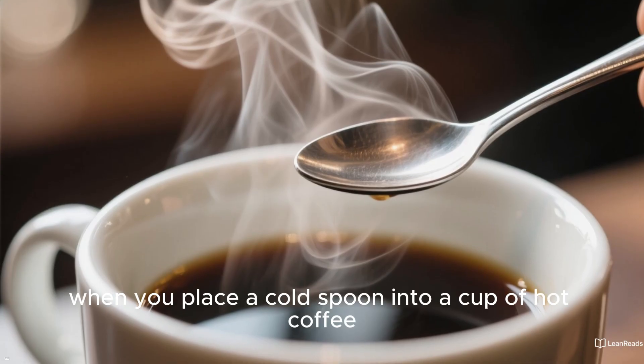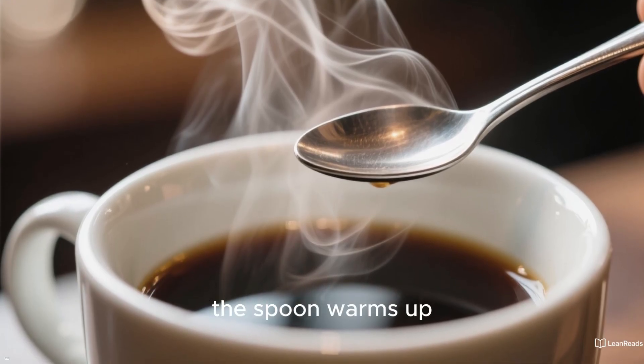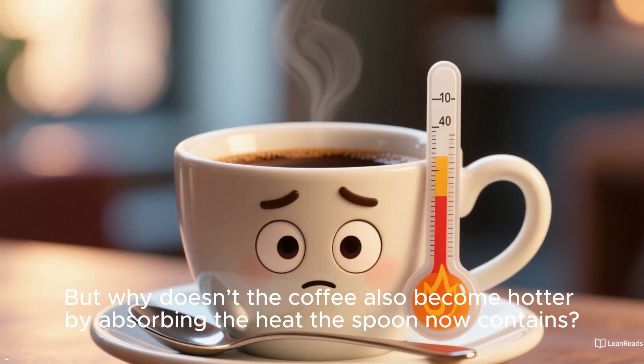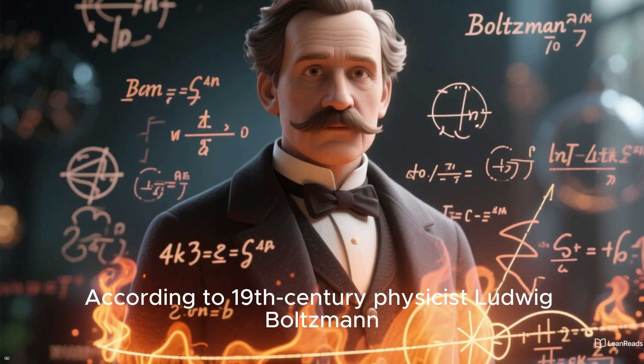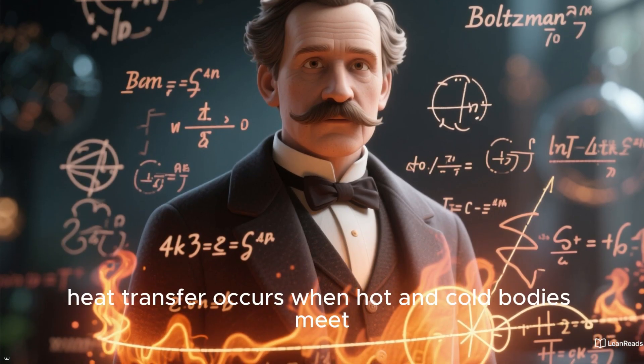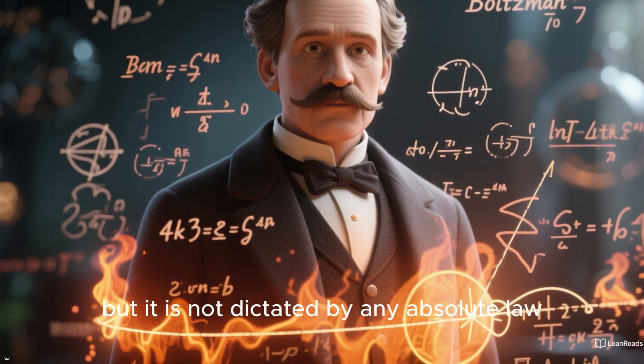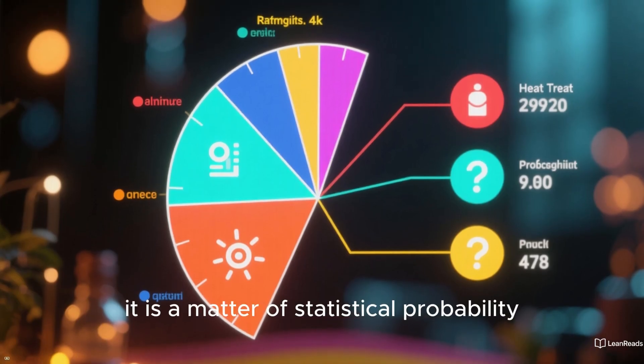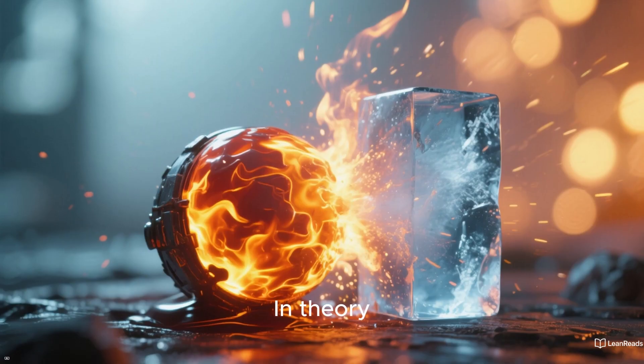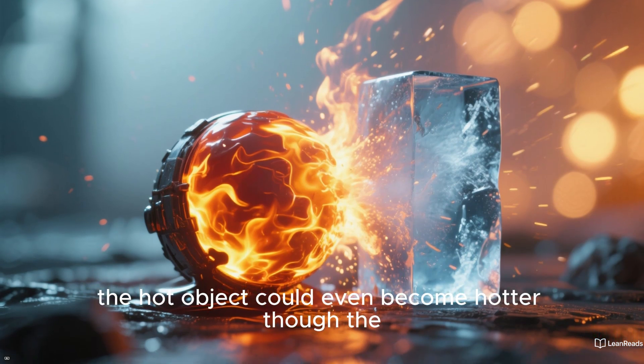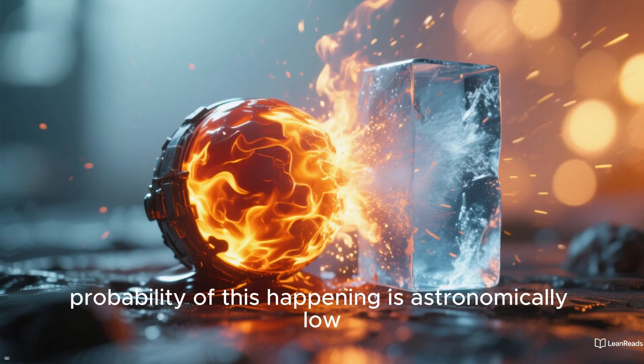For example, when you place a cold spoon into a cup of hot coffee, the spoon warms up. But why doesn't the coffee also become hotter by absorbing the heat the spoon now contains? According to 19th century physicist Ludwig Boltzmann, heat transfer occurs when hot and cold bodies meet, but it is not dictated by any absolute law. Instead, it is a matter of statistical probability. In theory, when a hot object touches a cold one, the hot object could even become hotter, though the probability of this happening is astronomically low.